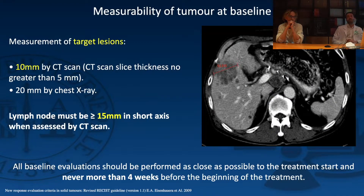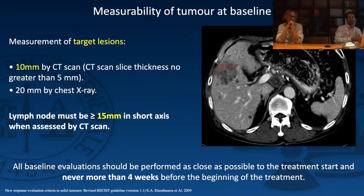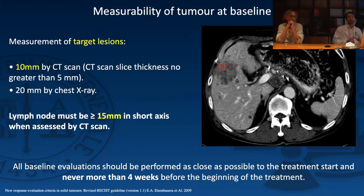A target lesion must be at least 10 mm in its long axis diameter. You can study treatment response using chest X-ray, but CT scan is used for response assessment, requiring a slice thickness of no more than 5 mm. The only exception is lymph nodes, which must be at least 15 mm on the short axis — more than the 10 mm threshold for other lesions.